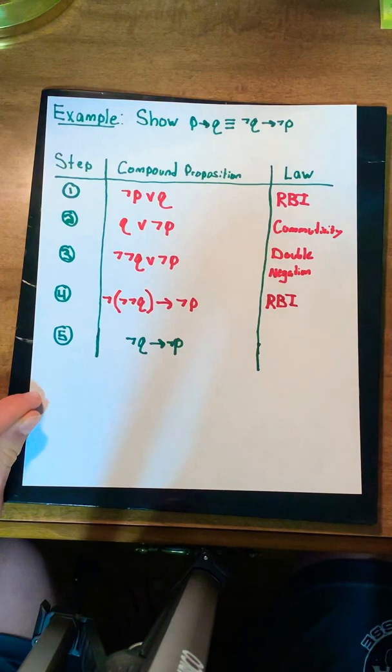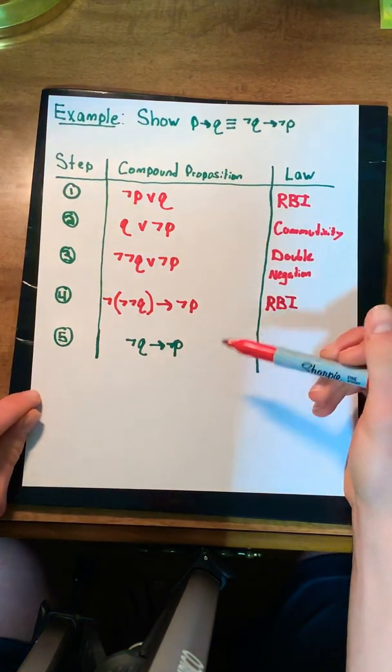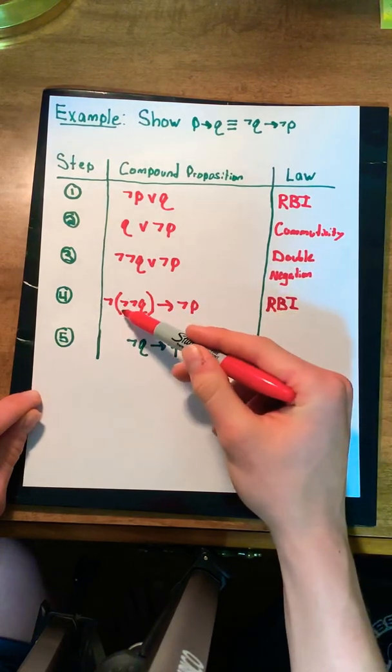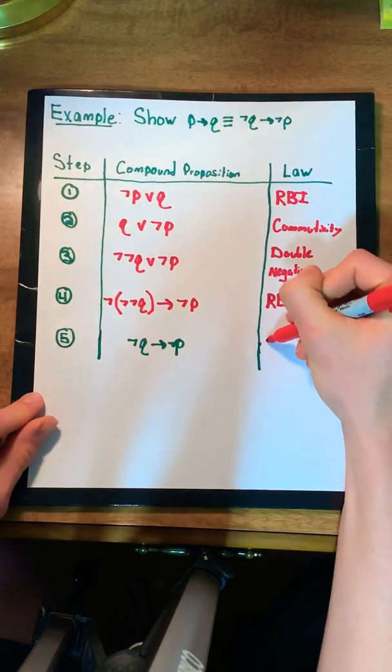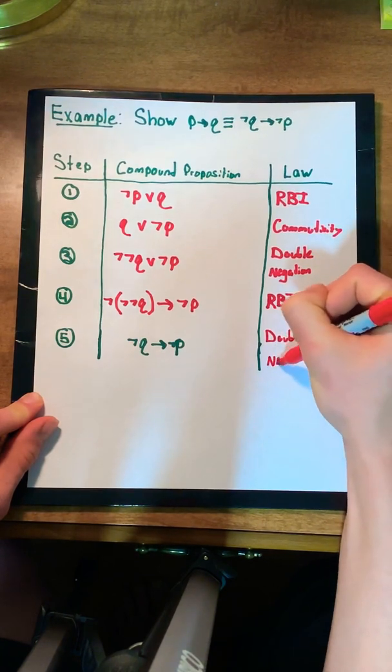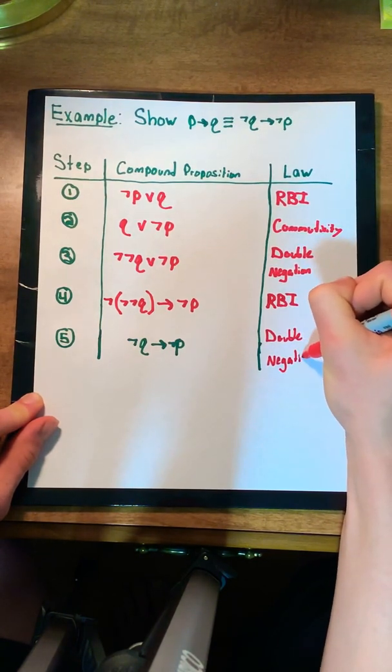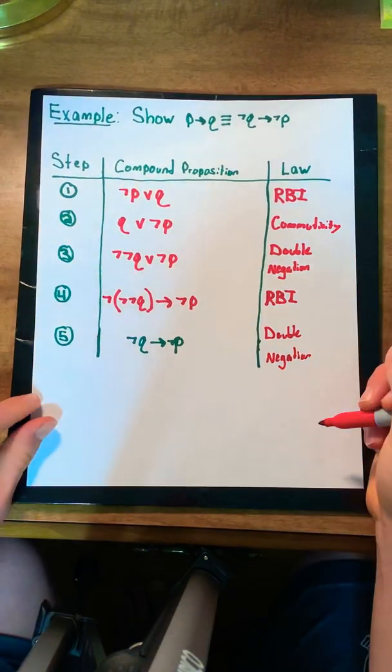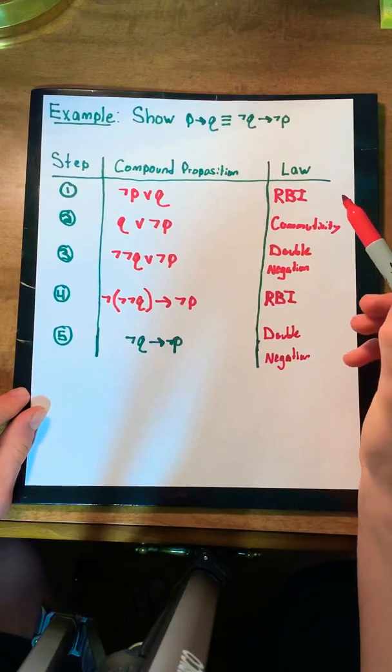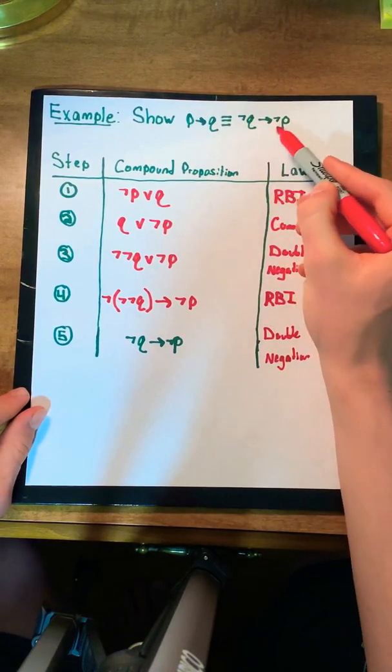And so our final step, which I've already laid out, would actually just be removing this double negation. Because again, saying not not Q is really the same thing as saying Q. And so again, we use double negation. And just like that, using logical equivalences, we've shown that if P then Q is logically equivalent to if not Q, then not P.